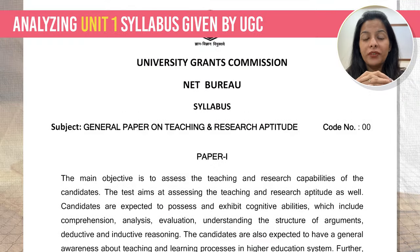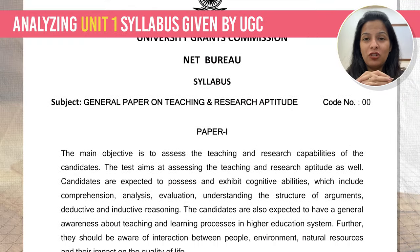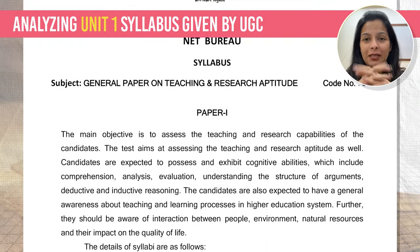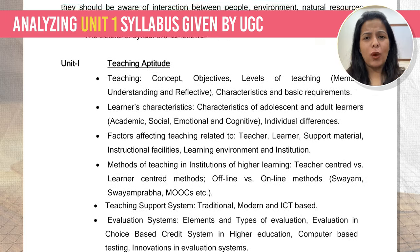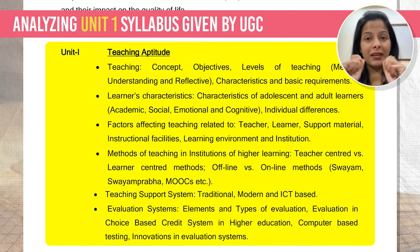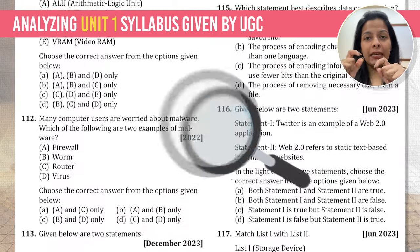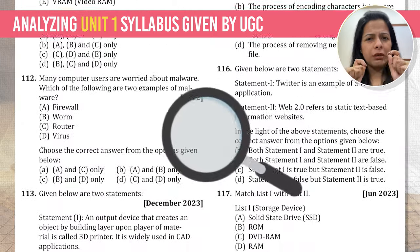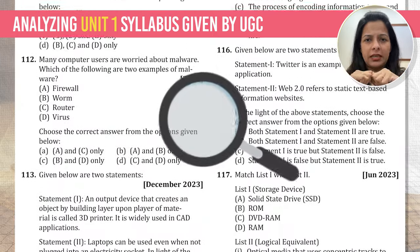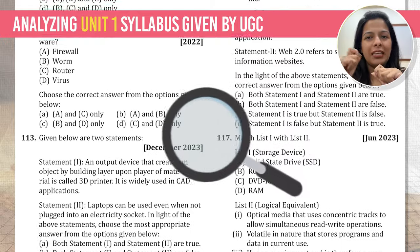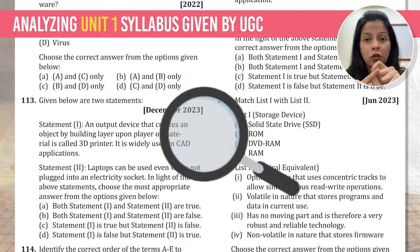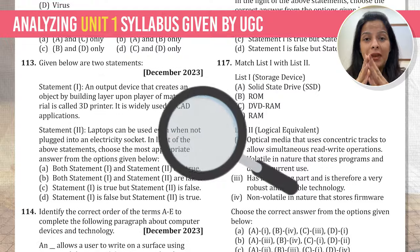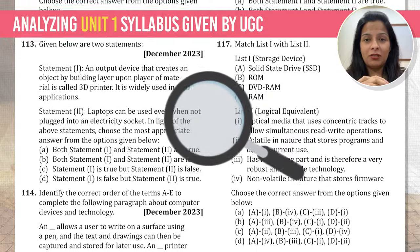First, let's quickly go over the official UGC Net Paper 1 syllabus as provided by UGC — that syllabus is right in front of your screen. But here's a catch: when we analyze the previous year questions, we notice something very interesting. There are certain topics that keep showing up in the exam even though they are not explicitly mentioned in the official syllabus.